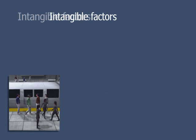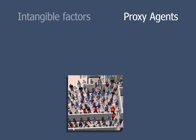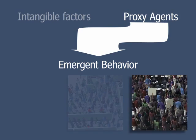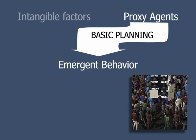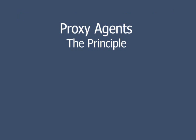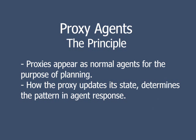We translate these intangible factors into proxy agents in the simulation system. By carefully designing the characteristics of these proxies, complex crowd behaviors will naturally develop through the simulator's basic planning mechanism. The central idea behind proxy agents is twofold. First, when planning a path, agents view the proxy as indistinguishable from any other agent in the system and must plan around it. Second, how the proxy updates its state determines the pattern in agent response.